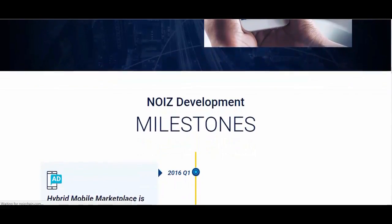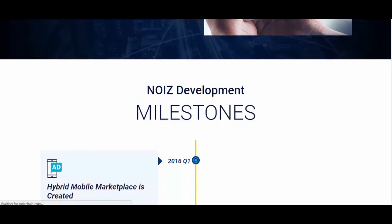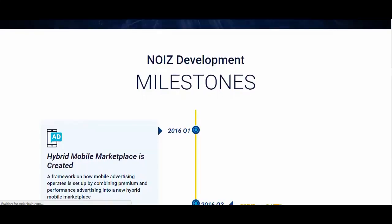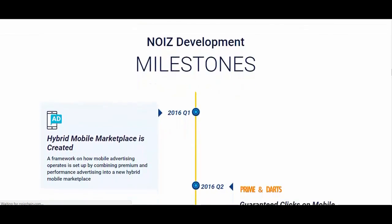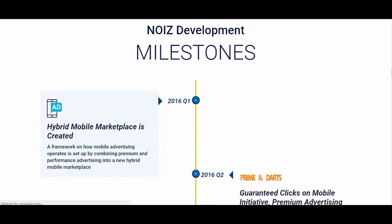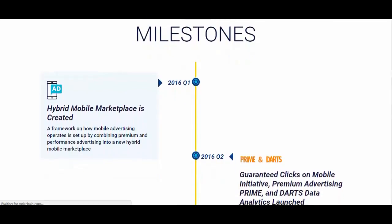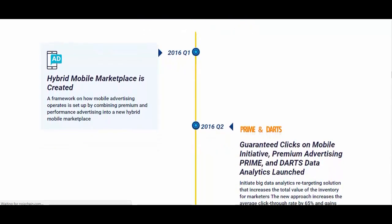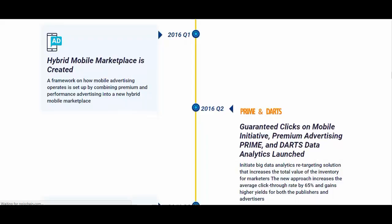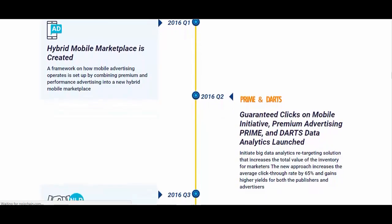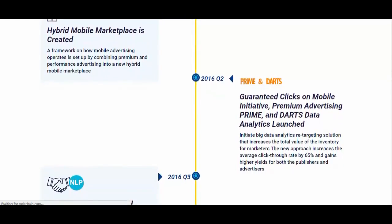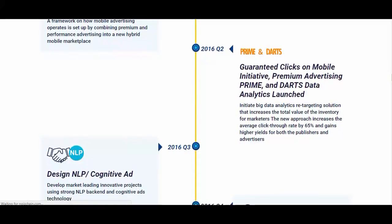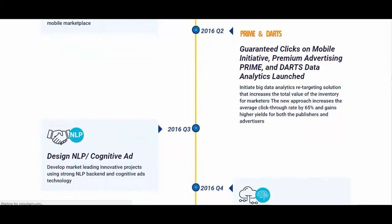Noise ad exchange allows advertisers to directly buy ad inventories from a variety of publishers. Advertisers will set up their auction ad campaign from the advertiser dashboard by selecting their targeting criteria and ad preferences. All ad campaign requests will be sent to the publisher dashboard, where they will await authorization by the publisher. Unlike current ad exchange networks, which place publishers and advertisers in silos and limit access to consumer data, the Noise ad exchange platform grants transparency to all parties, providing them with greater control over data.